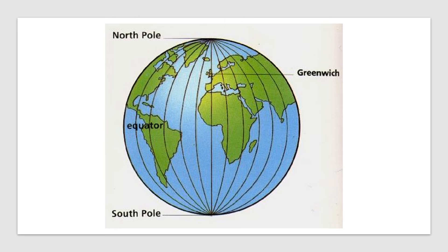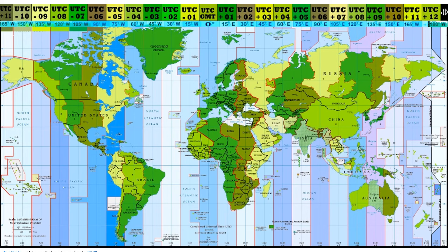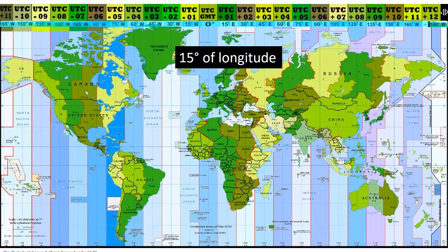The time zone of a particular location is often determined by its longitude. The earth is divided into 24 time zones, each covering 15 degrees of longitude. The prime meridian,